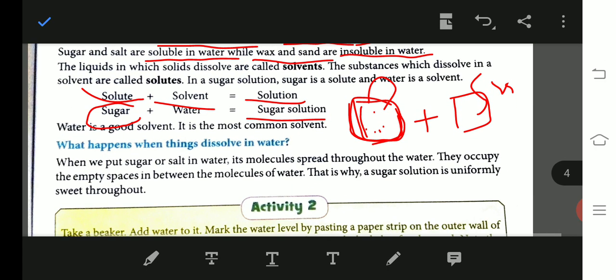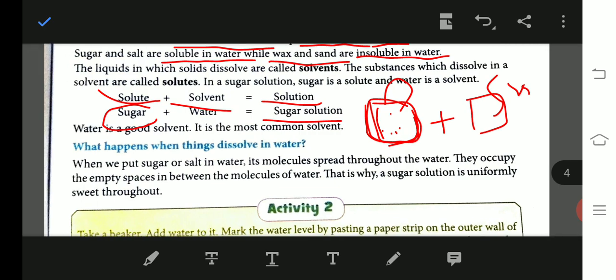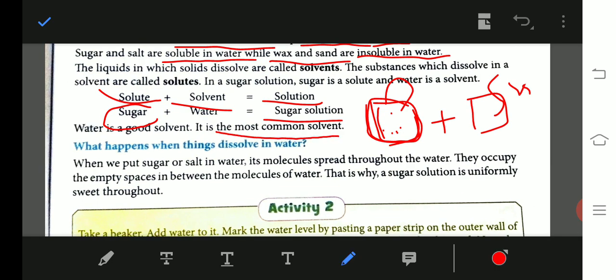Okay children, I think you have understood what is solvent, solute and solution. Water is a good solvent. It is the most common solvent. Water is considered a very good solvent because it dissolves many substances. Many substances dissolve easily in liquid. That is why water is considered a very good solvent in nature.